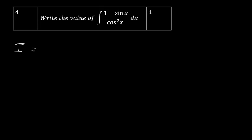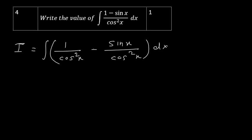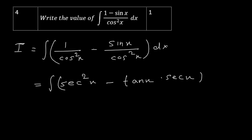The fourth question: I = ∫ [1/cos²x - sin(x)/cos²x] dx. 1/cos²x = sec²x, and sin(x)/cos²x = (sin(x)/cos(x)) · (1/cos(x)) = tan(x)·sec(x). So this becomes ∫ [sec²x - sec(x)tan(x)] dx. Integration of sec²x is tan(x), and integration of sec(x)tan(x) is sec(x). So I = tan(x) - sec(x) + c. Formulas are very important.